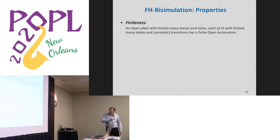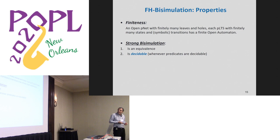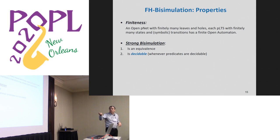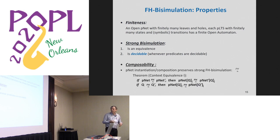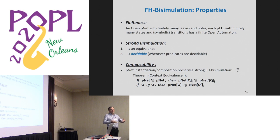We proved in a FORTE paper three years ago that starting from a PNET under reasonable hypotheses, you get a finite open automaton, and this is an equivalence — transitivity was especially complicated to prove. It's decidable whenever inclusion of predicates is decidable. And there is a very important congruence theorem: you can replace PNETs by equivalent PNETs in any context. If you prove some property — temporal logic or equivalence — then by composition of PNETs you keep those properties.